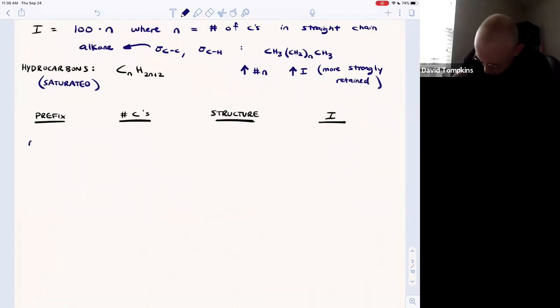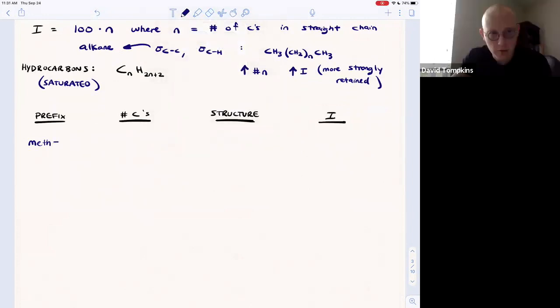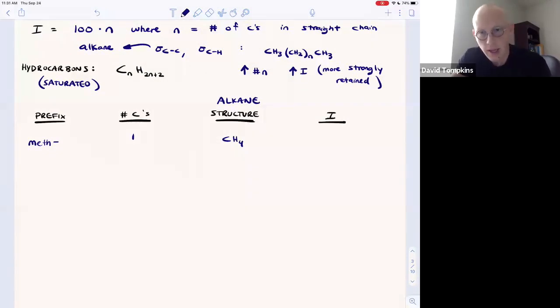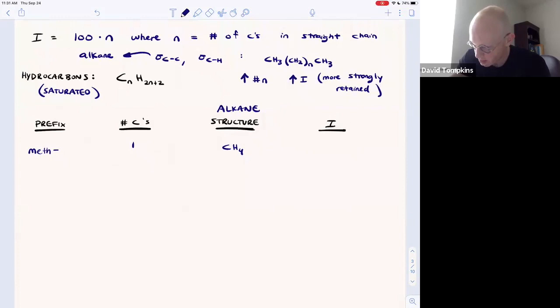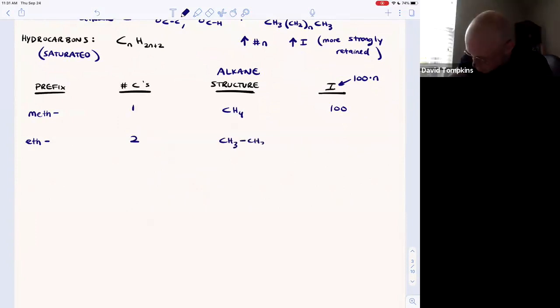If the prefix is meth, for example methane, the number of carbons is one. The alkane methane would have structure CH4, and its Kovats retention index is defined as 100 or 100 multiplied by number of carbons. If we increase that carbon count to two, the prefix becomes eth. This now has structure CH3 bound to CH3. Each carbon has four bonds, and the Kovats retention index is 200.